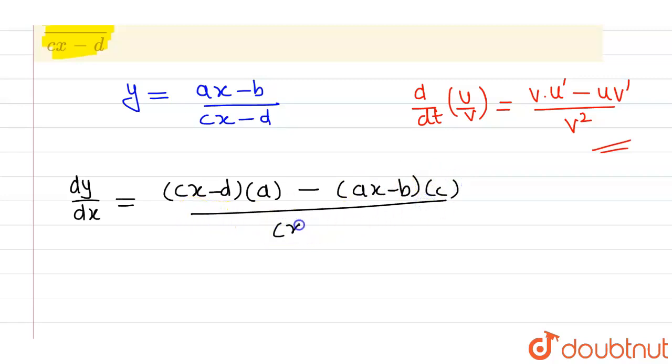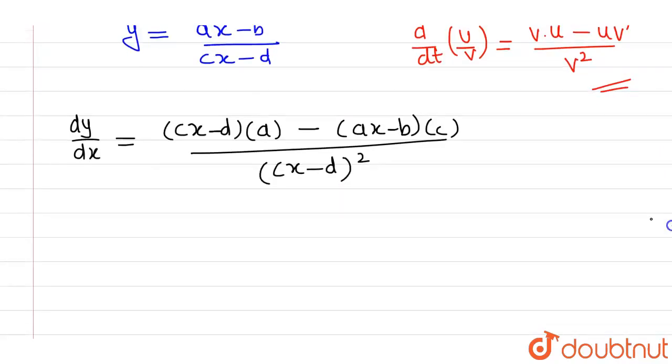by cx minus d whole square. Now, if you simplify this, then you will be getting dy over dx as, this will be equals to, dy over dx will be equals to,